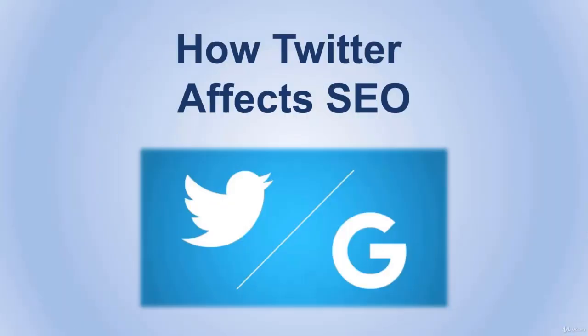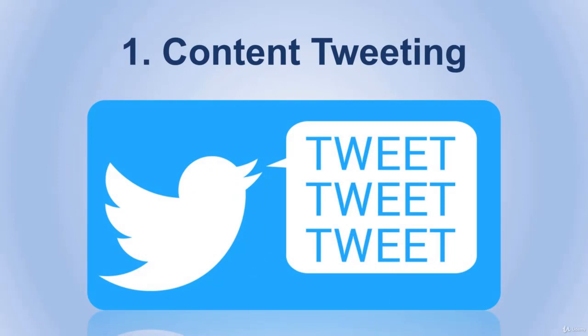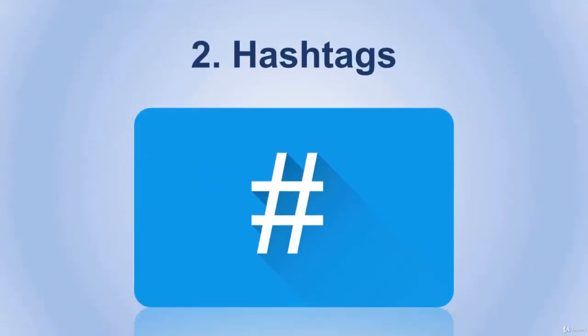Now let's talk about how Twitter affects SEO. After a lot of research, we discovered that Twitter can be used as a major SEO supporter in many situations. Number one: content tweeting. Just as Facebook has tons of users every day, Twitter also has a high number of users, and the best thing about it is that it lets users share content with a simple retweet button. You might just end up going viral, giving your content a great boost and increasing your SEO ranking.